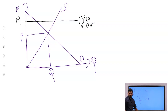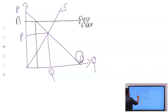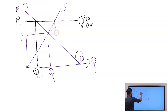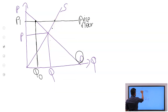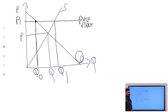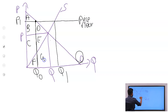At this price floor, customers are going to purchase this quantity and suppliers are going to supply this quantity. Now I am putting some letters on the diagram: A, B, C, D, E, F, G, H, I, J to label the areas in the graph.